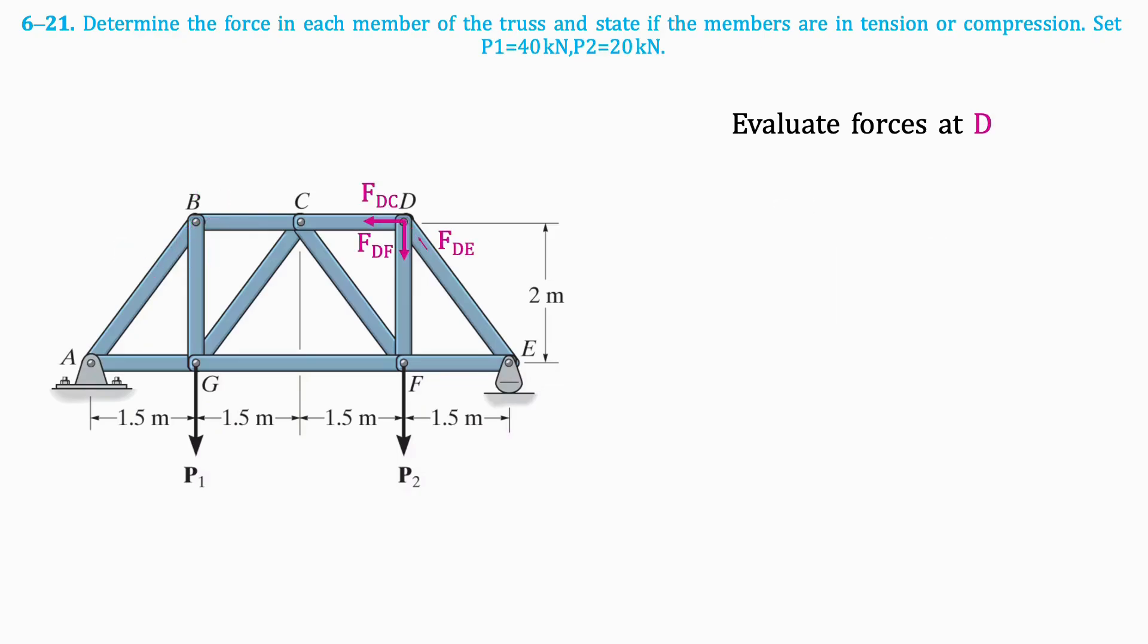Now, flipping the force FDE, as we previously determined it was in compression, will apply the same process as joint B. This results in the following forces, making sure to flip those in compression.